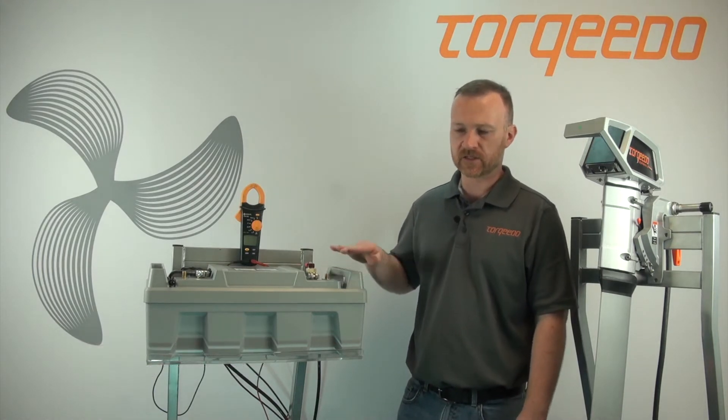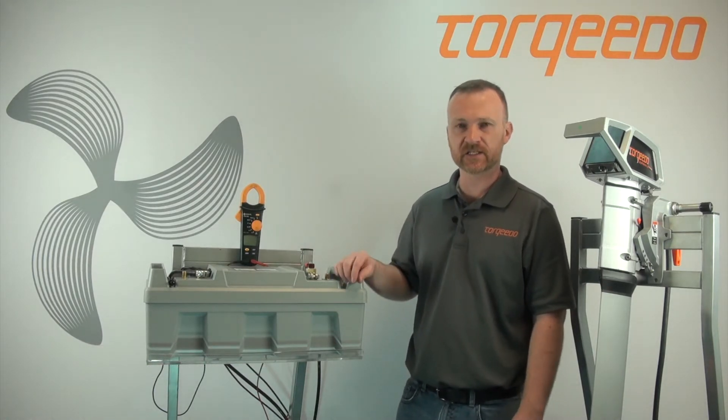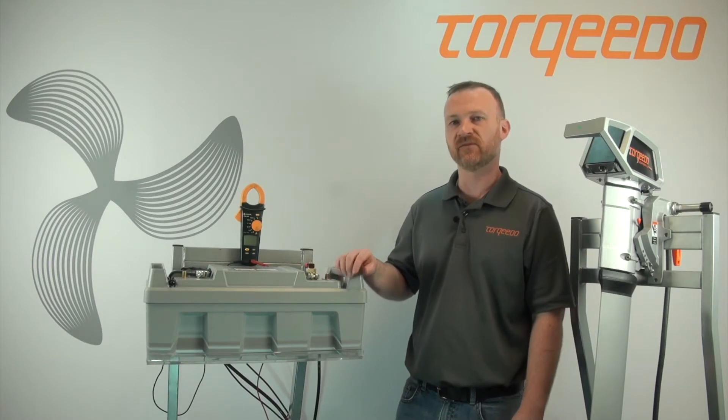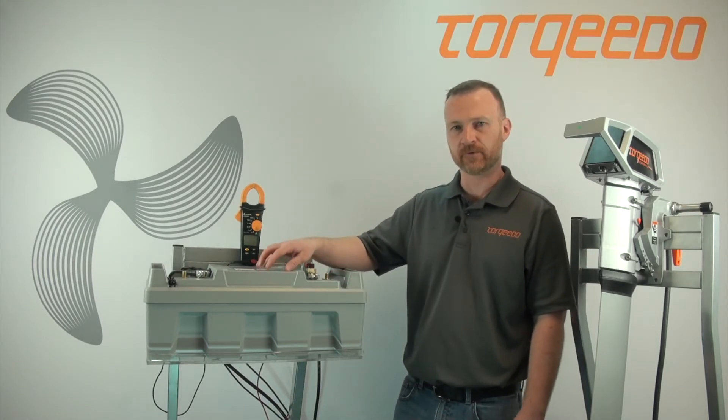If you have a Cruise 2.0 or 4.0 and you're using our Torqueda lithium battery and you're experiencing an E76, what this error code means is the voltage is too low in the battery.